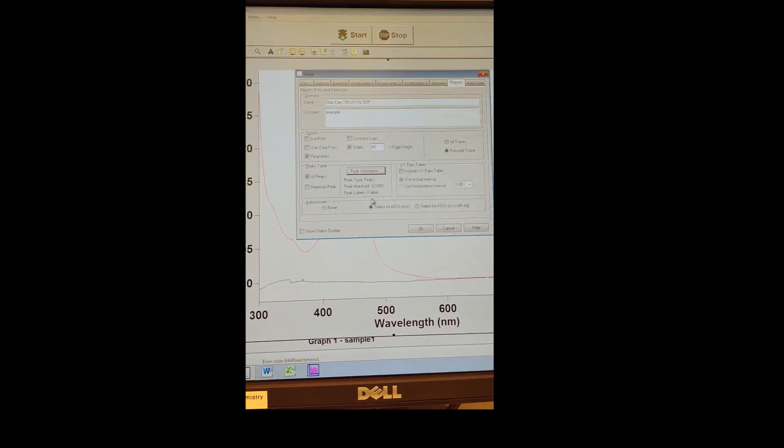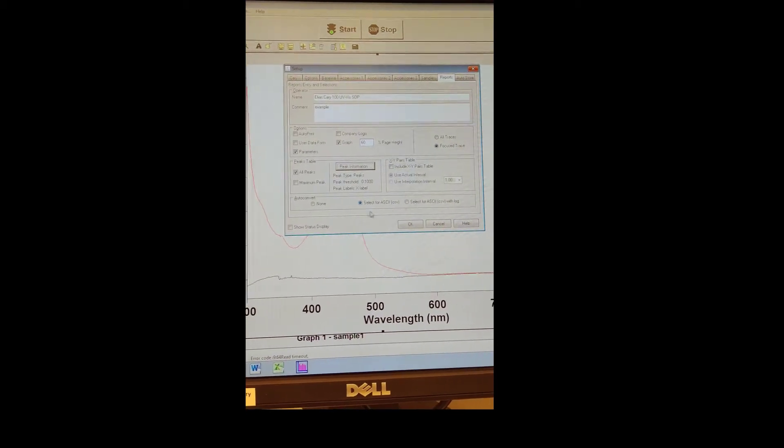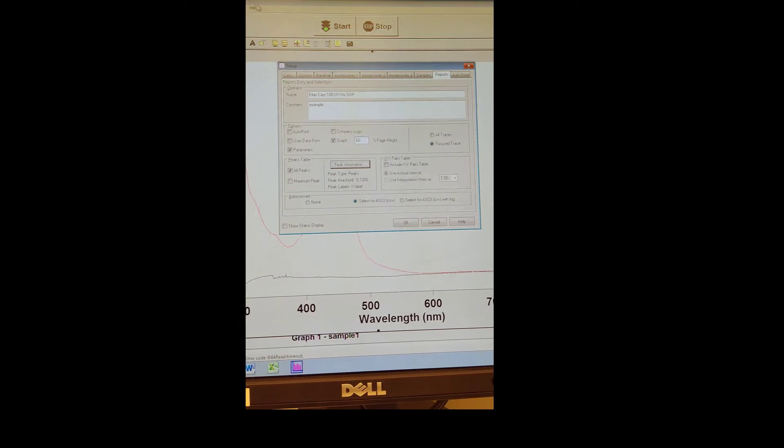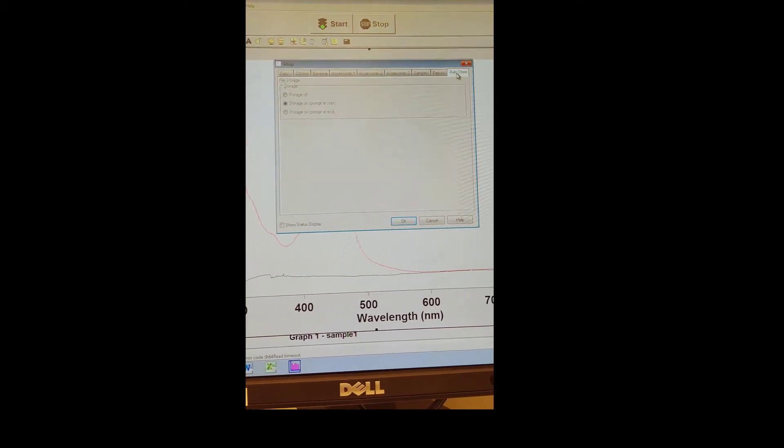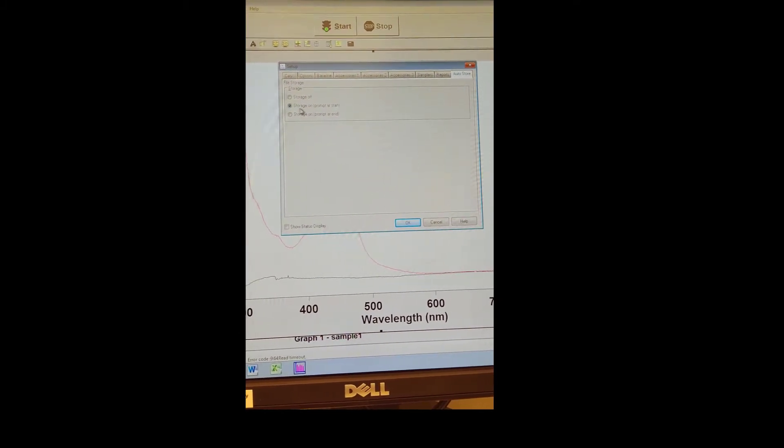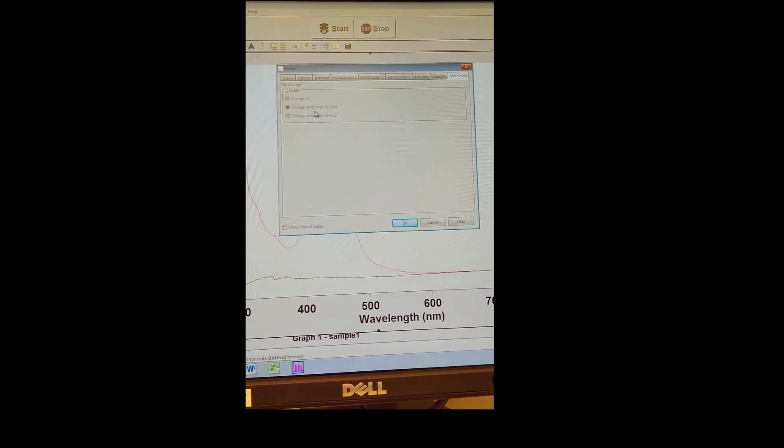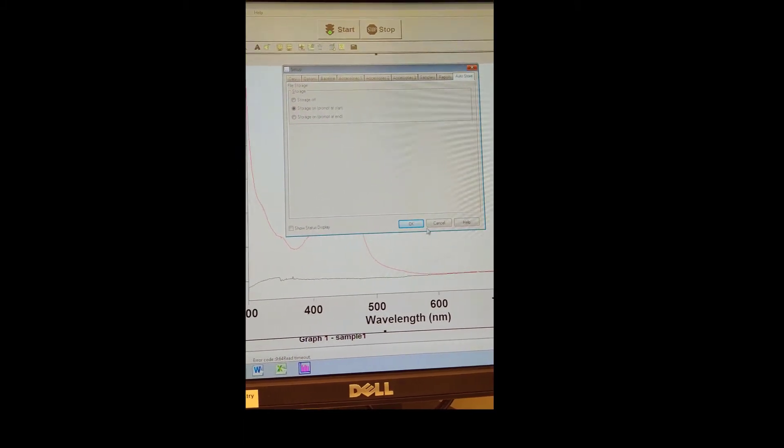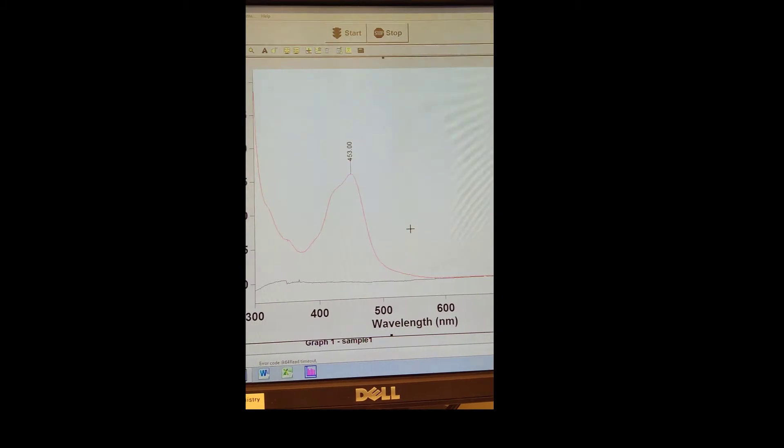Under Auto Convert, this is really important. Make sure that you select for ASCII CSV so that you generate a CSV file in addition to the raw data file. Under Auto Store, select Storage On and then Prompt at Start. Hit OK.